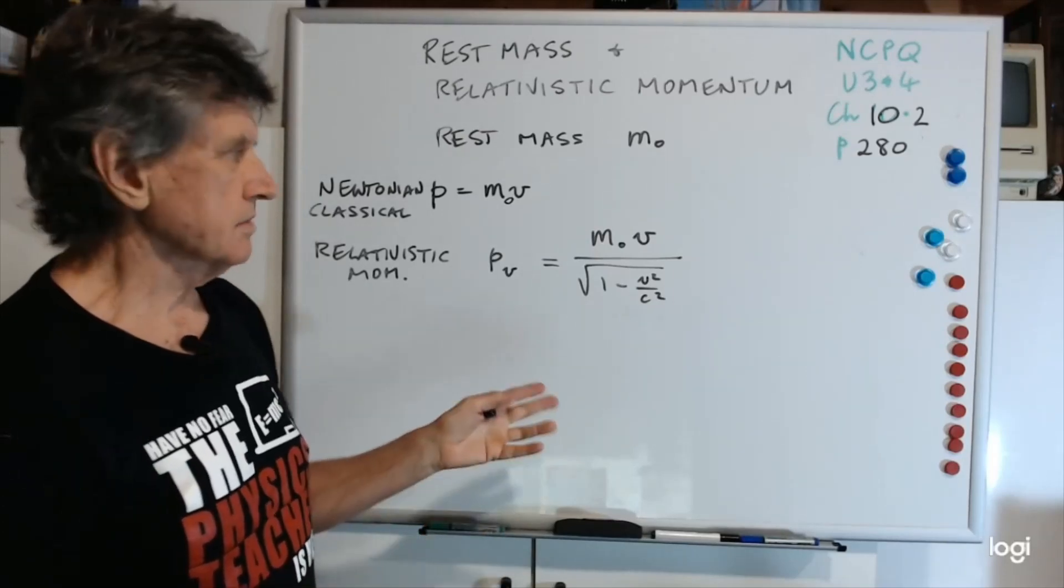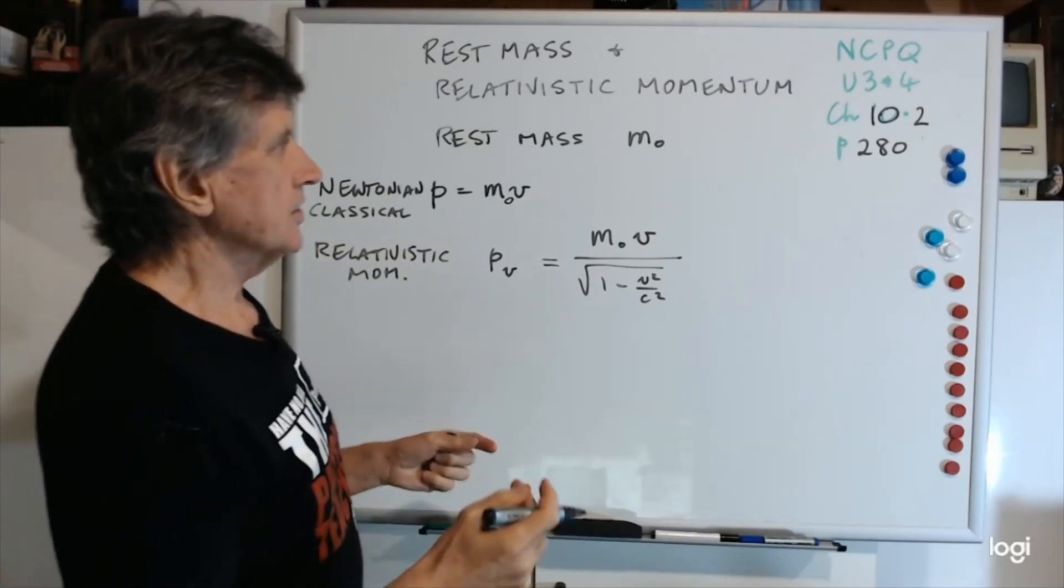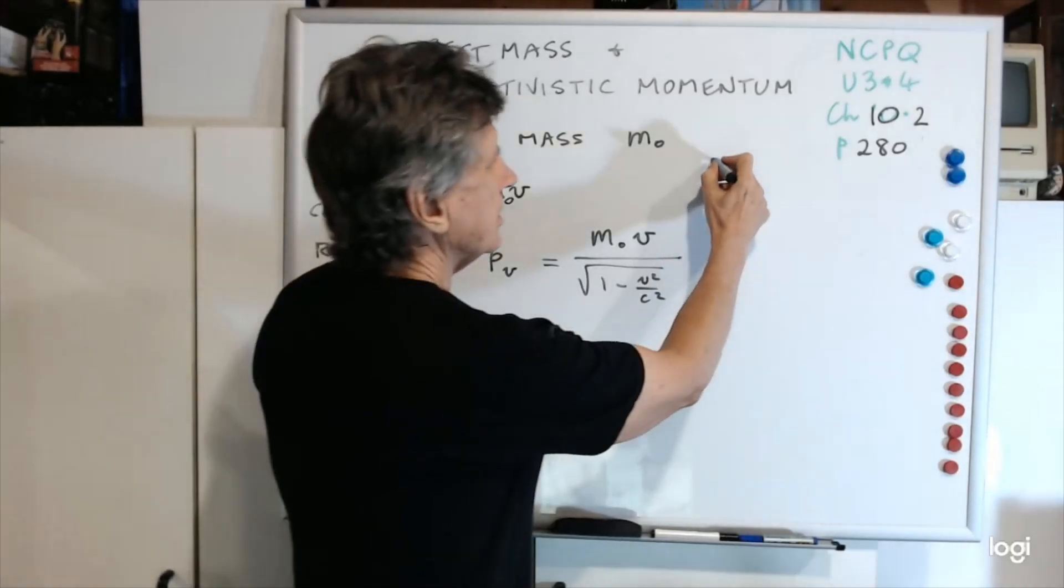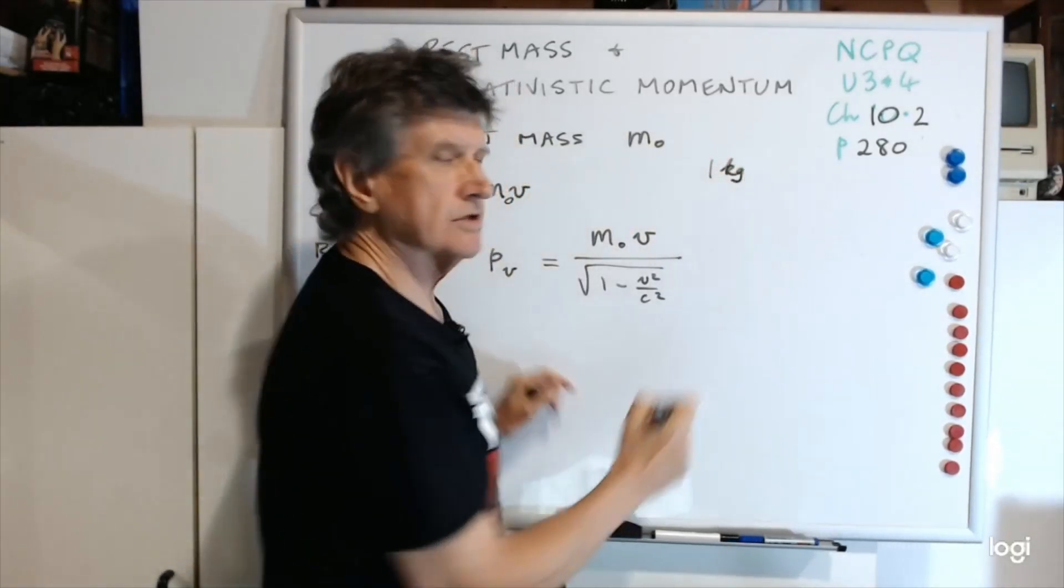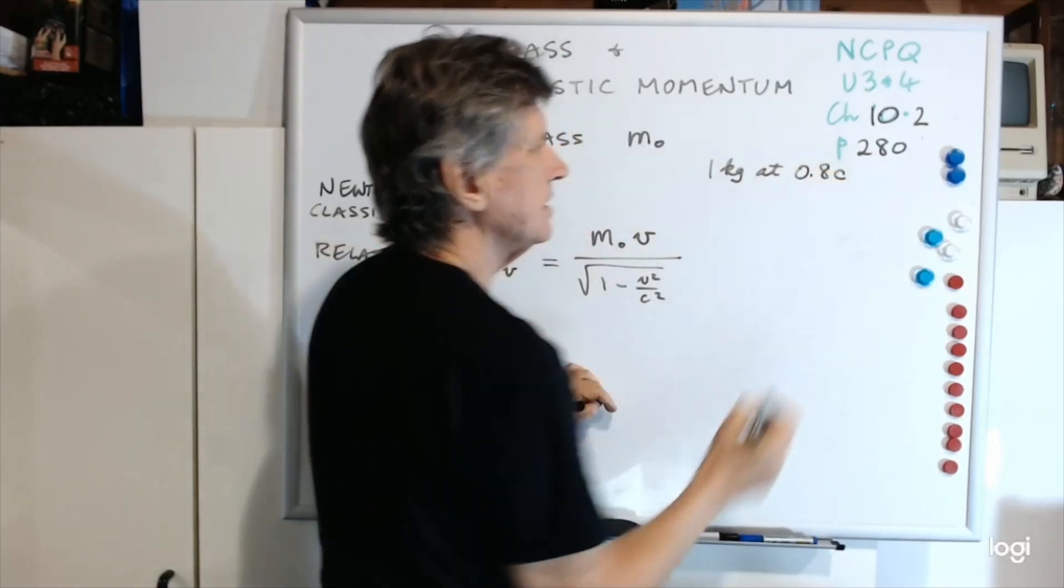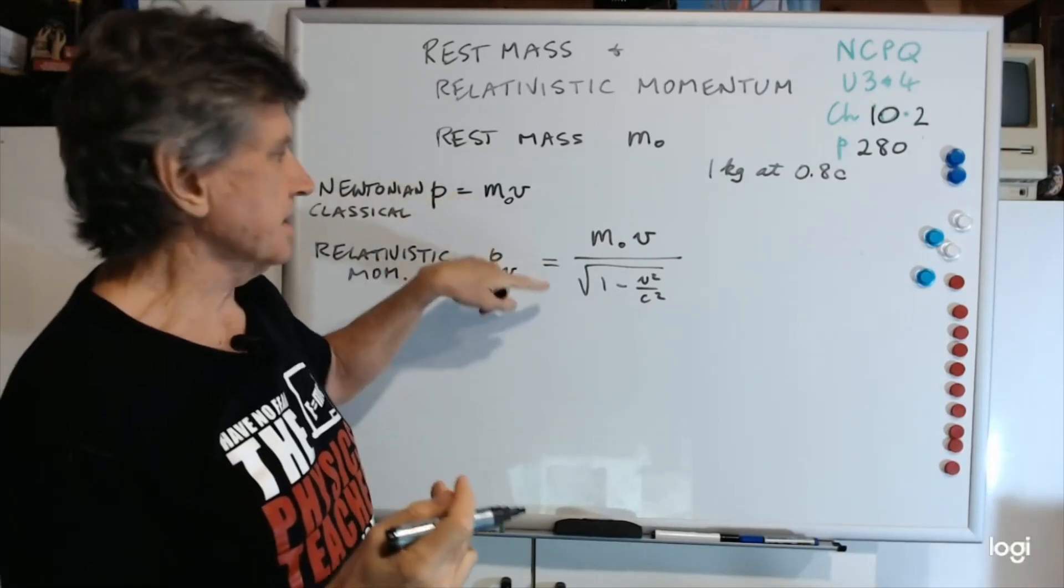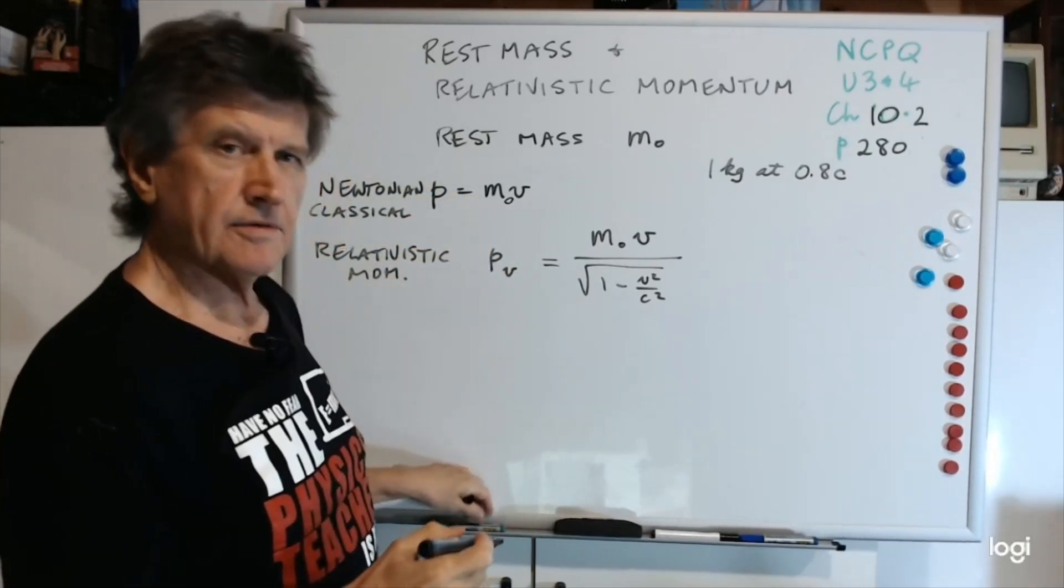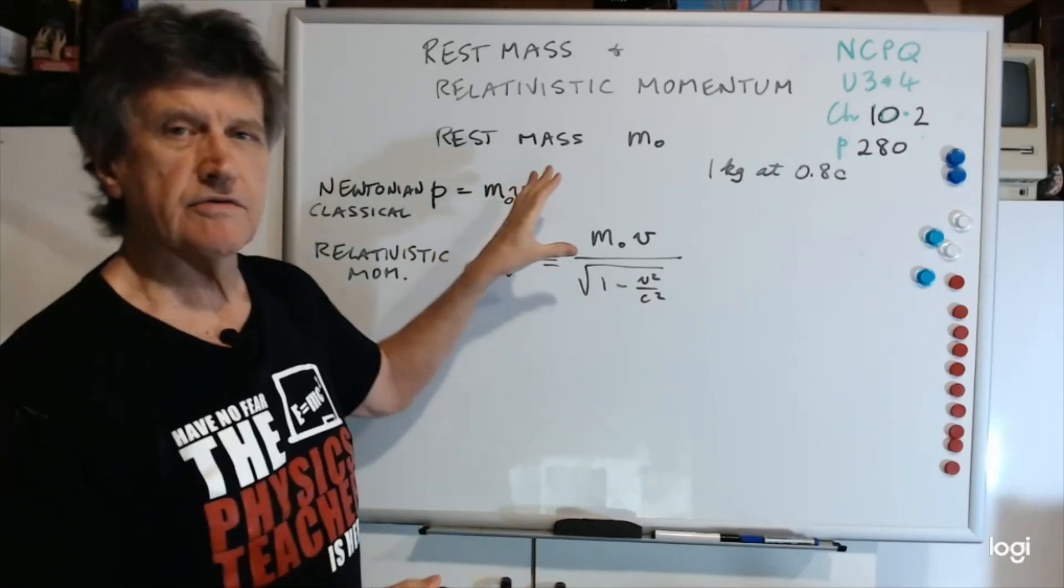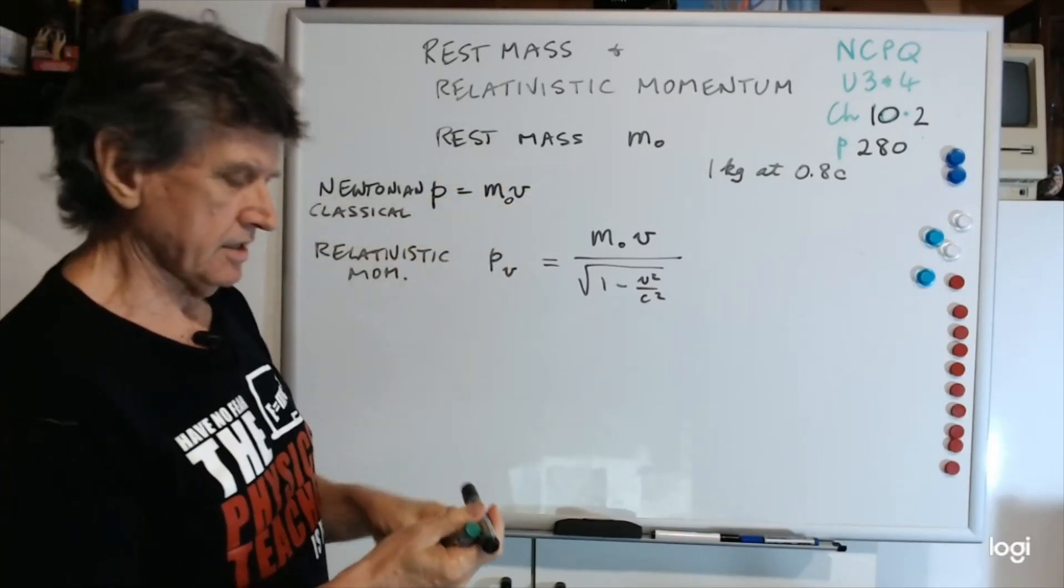We can do a simple calculation. Let's say 1 kilogram, to keep it nice and simple, travelling at 0.8c. So let's compare the relativistic momentum with the Newtonian momentum. Often you get questions like that, what's the ratio of the two? Well the simplest way is, basically, the safest way is to work out each of them.